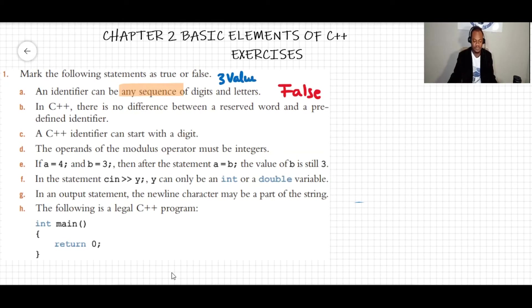This is wrong because this identifier starts with a digit, it's not acceptable in C++. So we were doing this question, question a. So identifier cannot be any sequence, so this question is false.